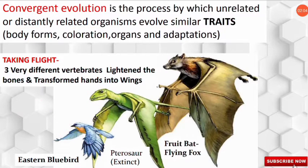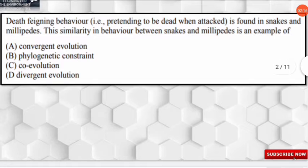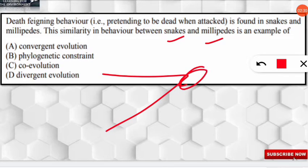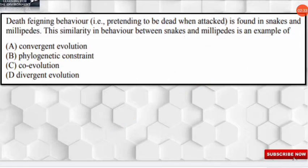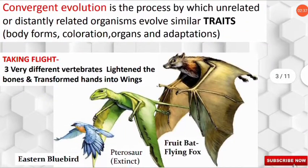The similar characteristics can be in the form of similar body forms, similar coloration, similar organs, their function, or adaptation. Going back to the question, the death feigning behavior is an adaptation to avoid predation. Snakes and millipedes have different ancestors, but they share this defense mechanism as a common adaptation. That's why this example shows convergent evolution.